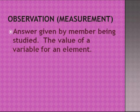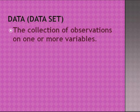An observation, or measurement, is the answer given by a member being studied — the value of a variable for an element. Data, or a data set, is the collection of observations on one or more variables.